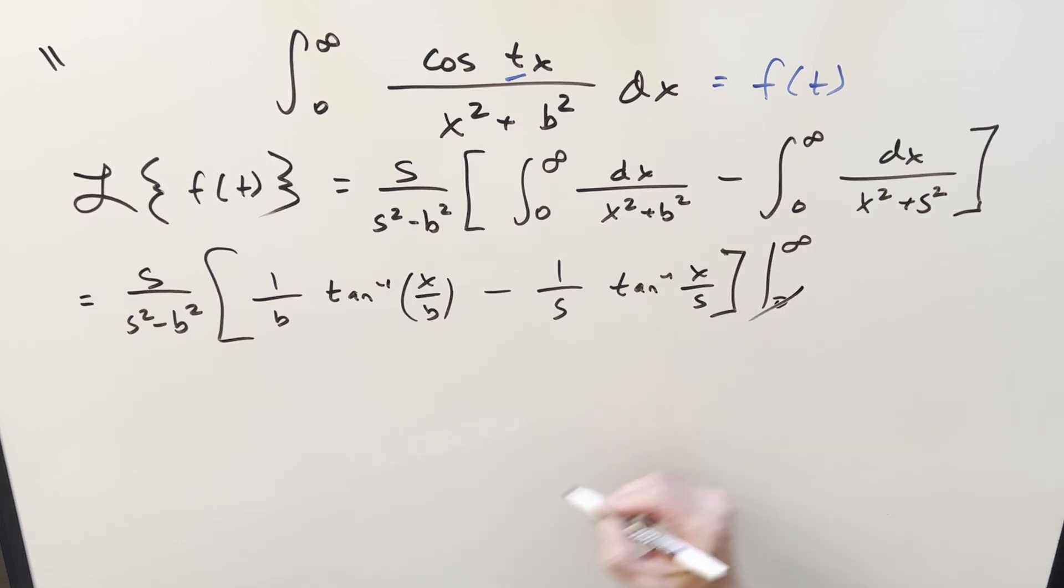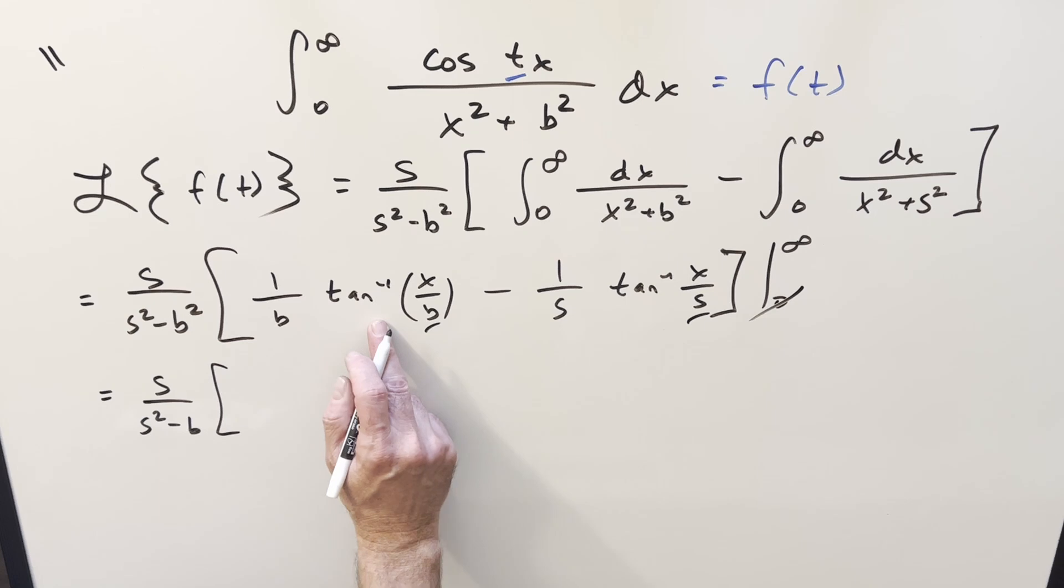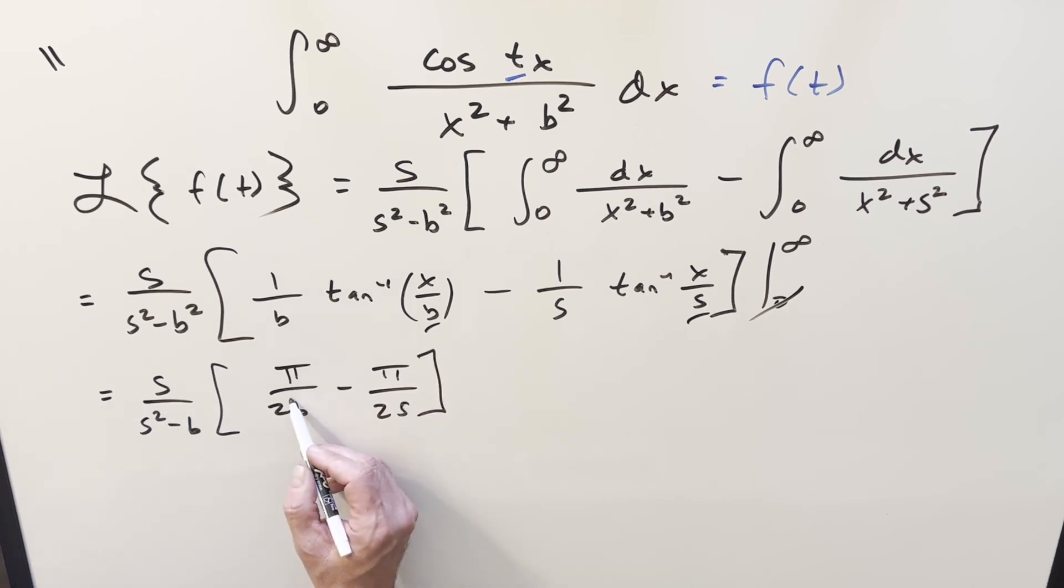Now arctan at 0 is just 0. Don't worry about that. But here, these constants don't matter. When we evaluate at infinity, we get pi over 2. So putting this together, we're going to have s squared minus b. Evaluating this at infinity, we have pi over 2. So let's write this as pi over 2b. And for this one, this is going to be pi over 2s. So let's factor, we get pi over 2 in common. Let's factor that out front. Bring that over here. So we'll have our pi over 2 on this.